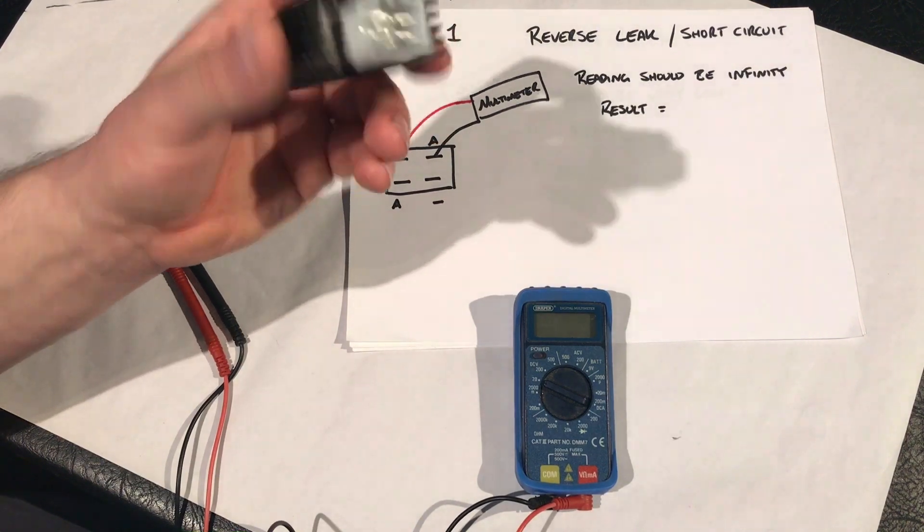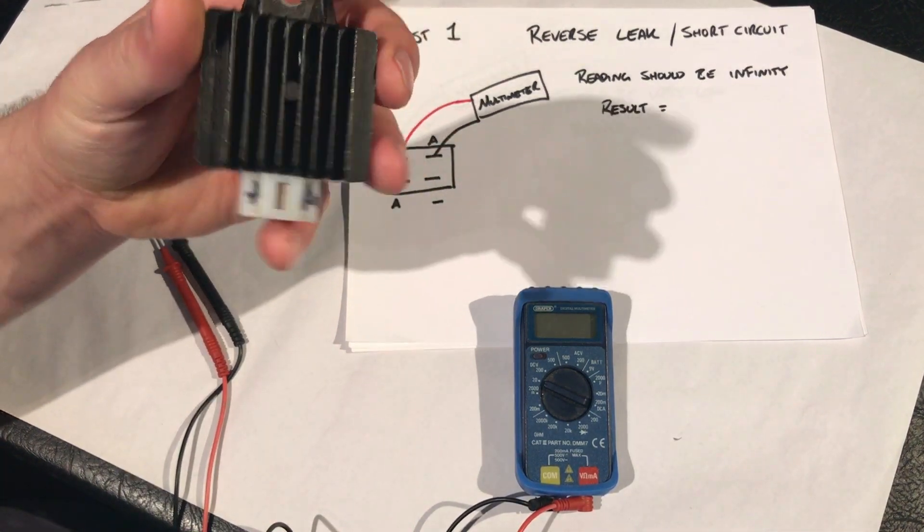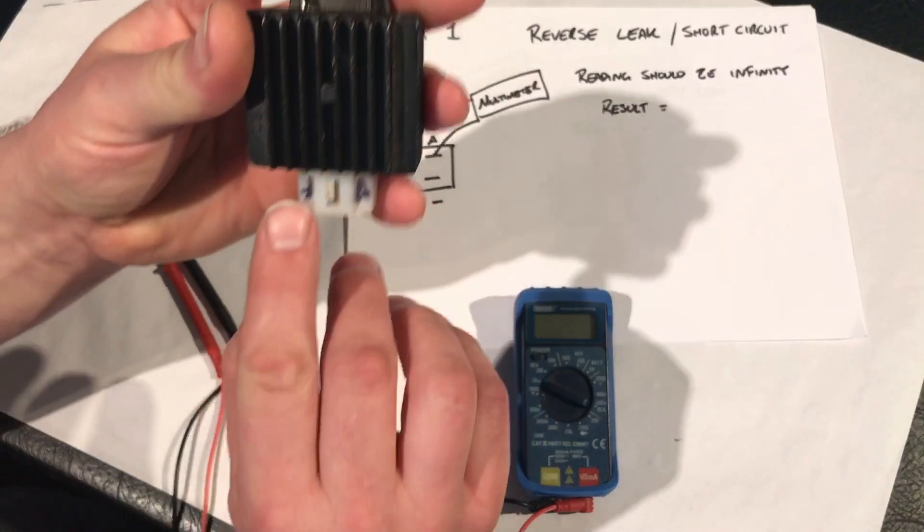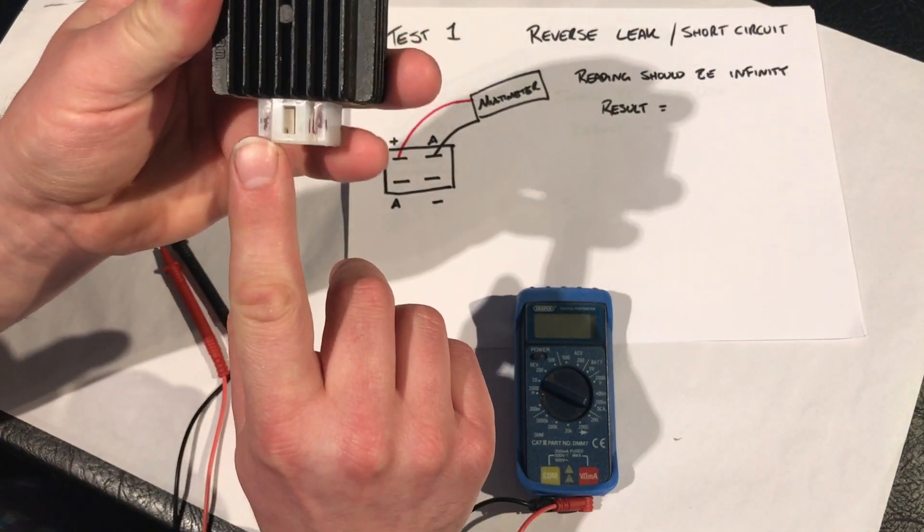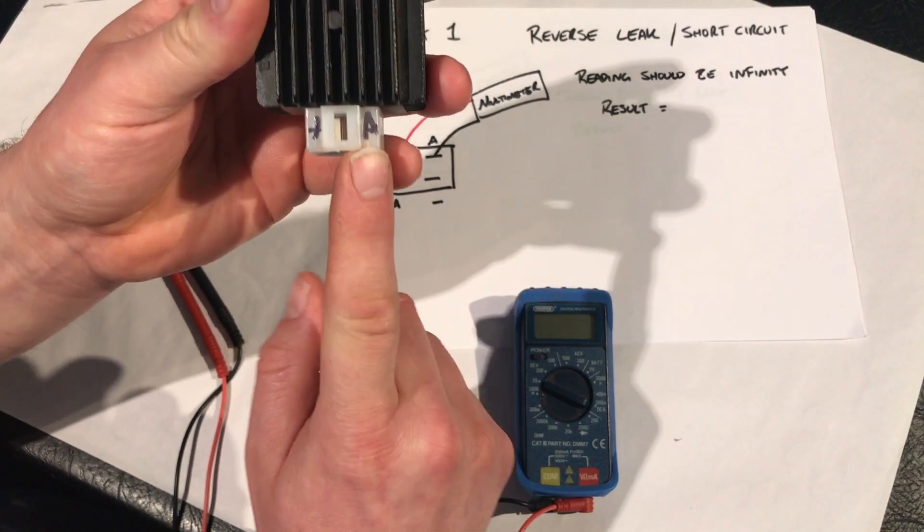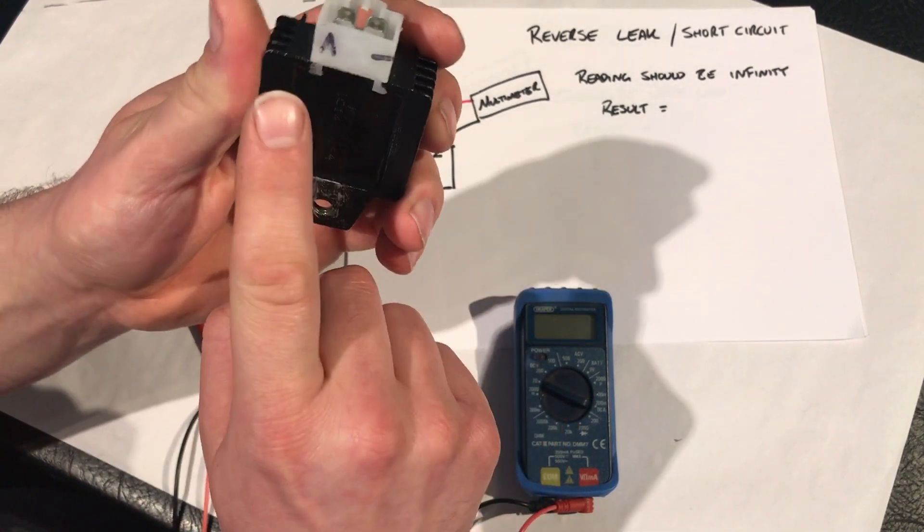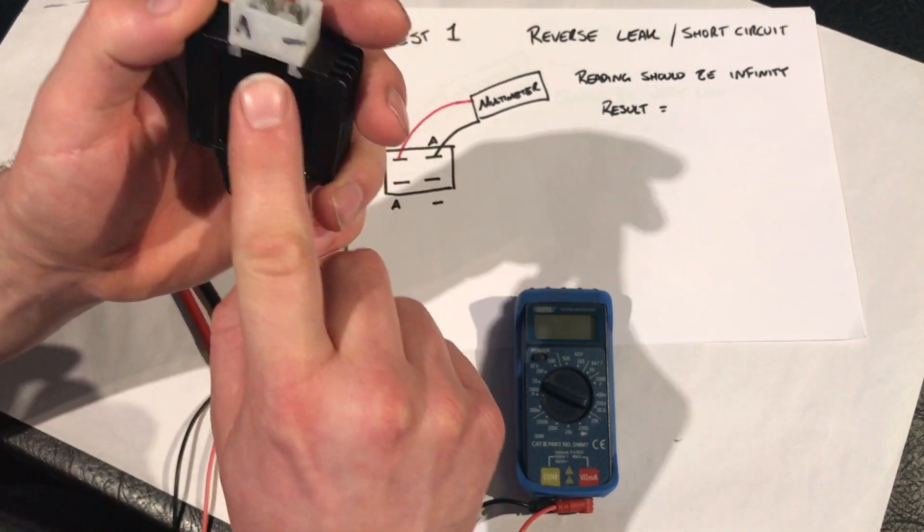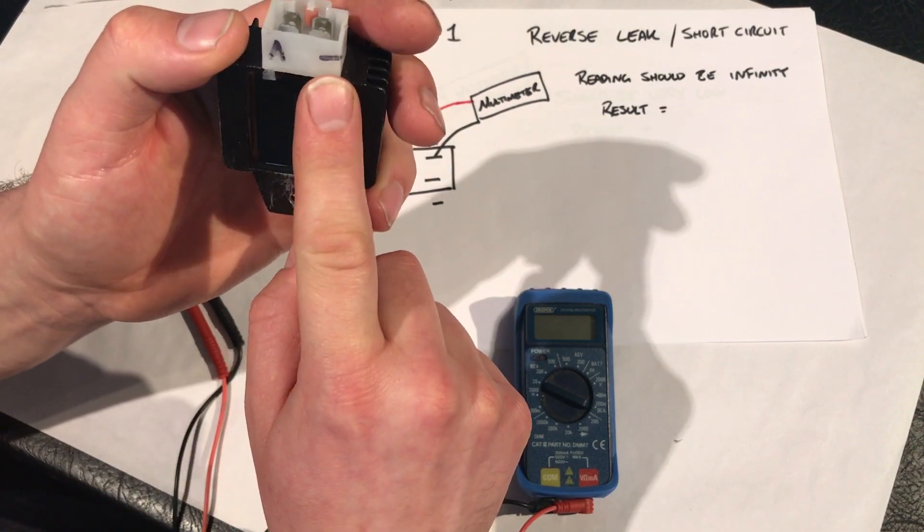We're here with the test setup for the regulator rectifier. As you can see, I've marked you that we're positive, which is battery positive. A, which is the alternator, also known as stator. And you've got the other alternator, and the battery negative, or body earth.